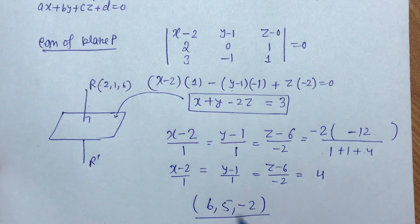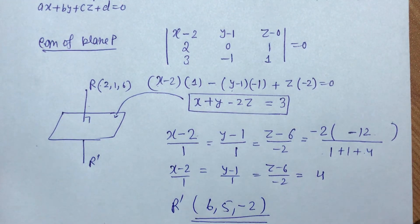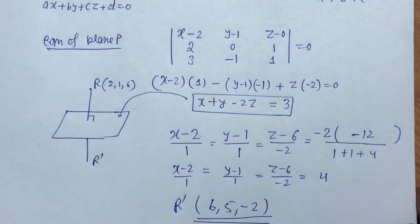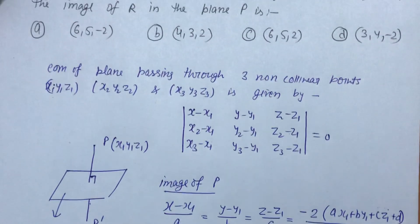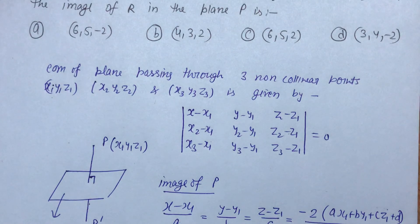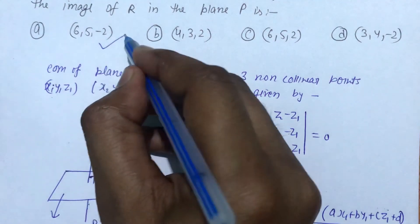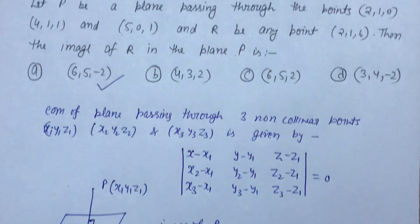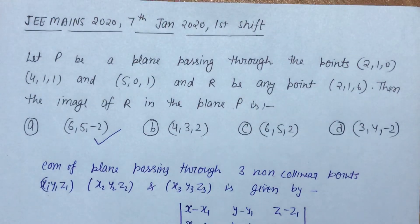So the coordinates of the image of R are (6, 5, -2). The correct answer is option A. Thanks for watching the video, thank you all.